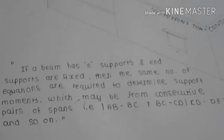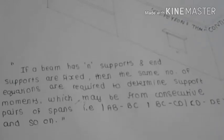So what is Clapeyron's theorem here? Clapeyron's theorem states if a beam has n supports, which is n number of supports, and n supports are fixed, then the same number of equations are required to determine the support moments which may be obtained from the consecutive pairs of spans, that is AB, BC, CD, DE, and so on.